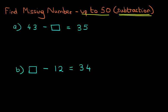Now let's have a look at the first one. We've got 43 minus something equals 35. And don't forget, the objective is to make sure that we get the missing number, that's the box, on one side of the equal sign. So what we're going to do is we're going to take this box and swap it with the 35.